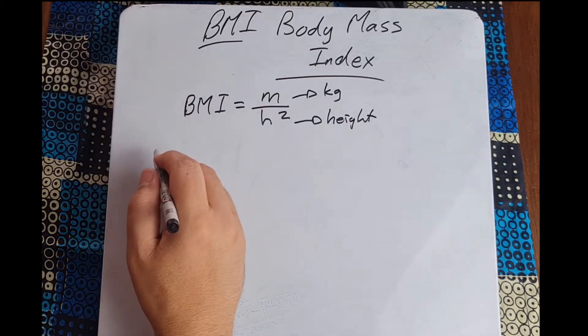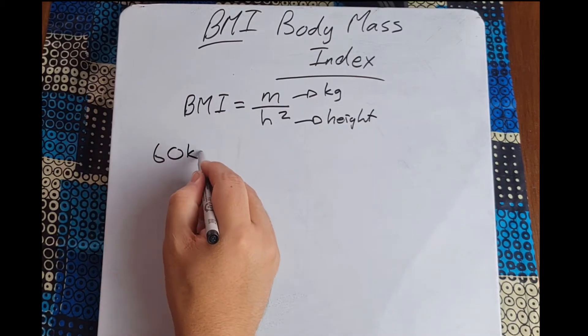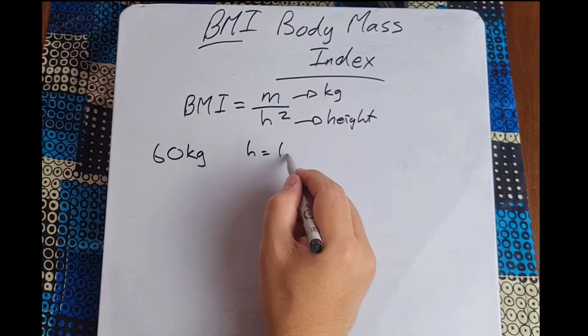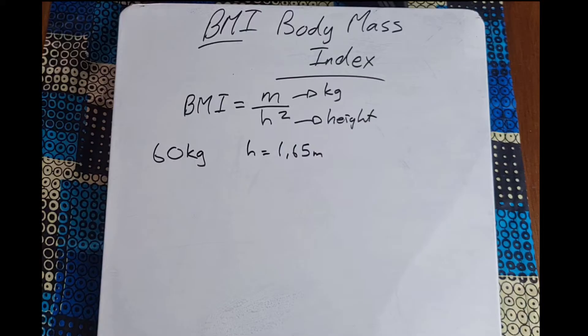So if we have someone who is 60 kilograms in weight and has a height of 1.65 meters, according to BMI what would they actually be?